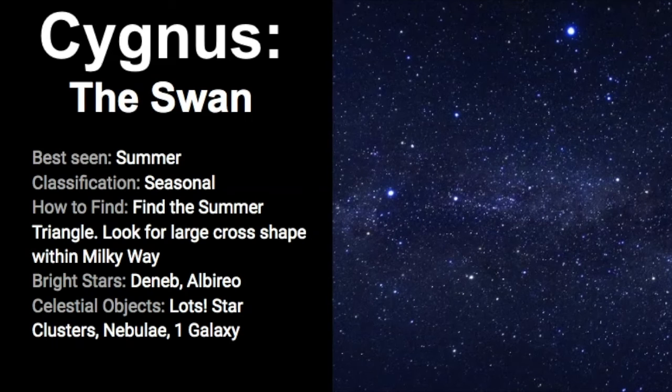We've come to the end of our video about Cygnus the Swan so let's review everything we've learned so far. It's best seen in the summer months and it's classified as a seasonal constellation. The best way to find it is to use the summer triangle asterism. You can also look for the large cross shape in the sky that sits right within the Milky Way galaxy. The bright stars of this constellation are Deneb which represents the tail of the swan and then the head of the swan is known as Albireo.